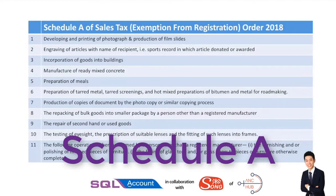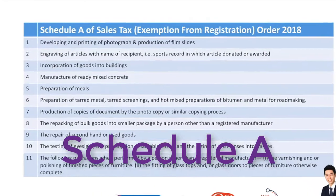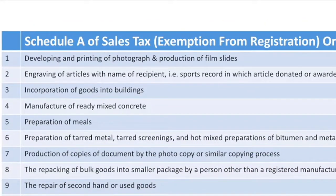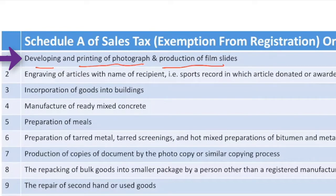Who are exempted from registration? Schedule A of the Exemption from Registration Order covers a few categories. For example, if you are a person developing and printing photographs or producing film slides, you are not subject to sales tax and do not have to register. Similarly, if you incorporate goods into buildings, you are also exempt.